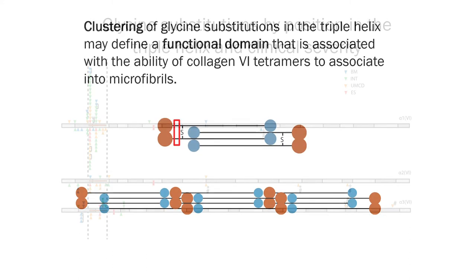We hypothesize that this region may represent a functional domain within the triple helix. It has been proposed that the 30 nanometer segment at the amino terminal end of the triple helical domain containing the critical region, marked here in red, forms a loop around the N-terminal domain of the adjacent tetramer during microfibre formation. A glycine substitution in this region may result in mutant tetramers that are unable to form normal associations with adjacent N-terminal globular domains.